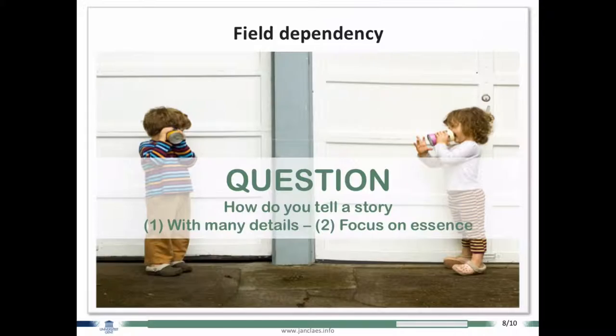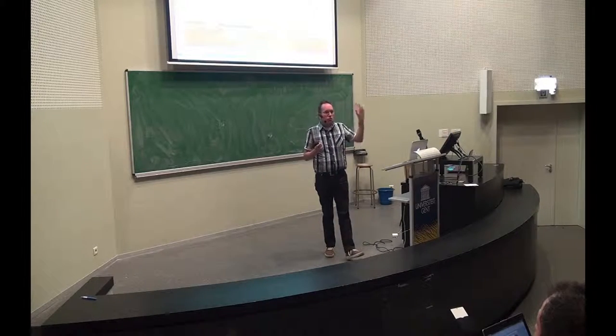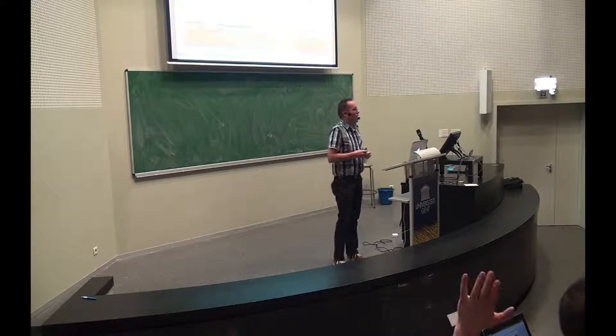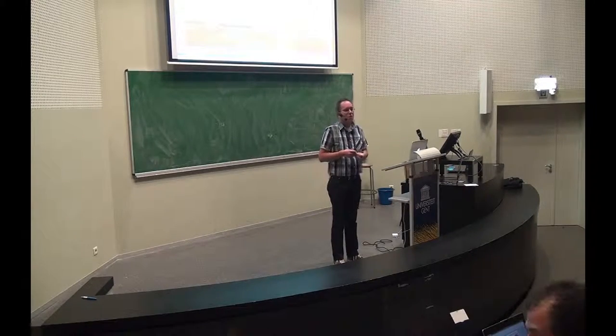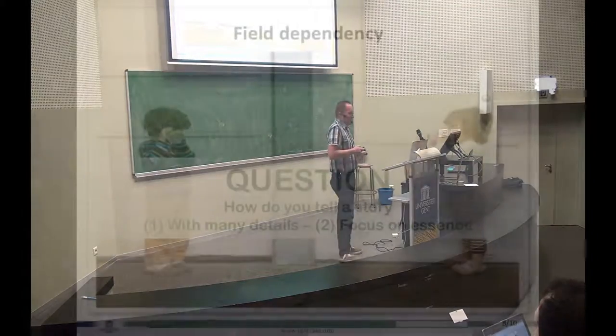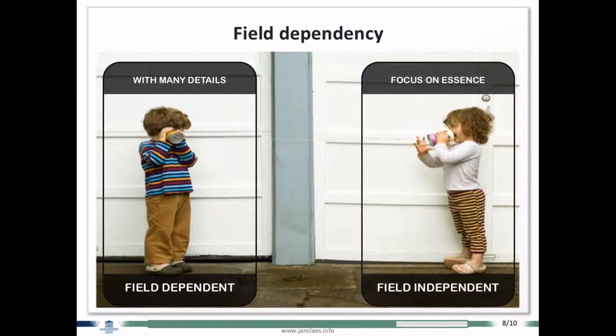Then second question, second style is field dependency. For example, if you tell a story, who will use a lot of details in their story? Raise your hand again. And then the other ones, who will focus on the essence? Well, the first ones you are field-dependent people. You need a lot of context, you need to be specific. While the second style, you are field-independent people. You have no troubles with abstract material.